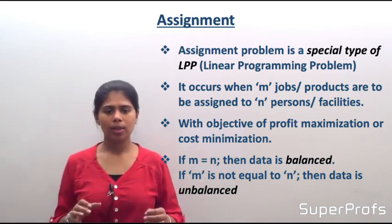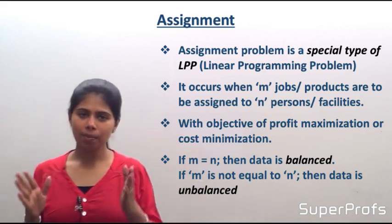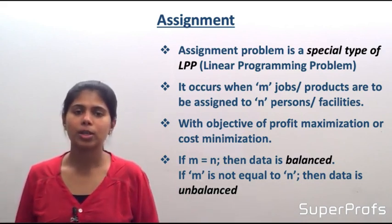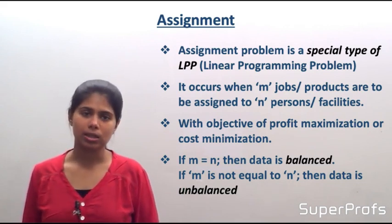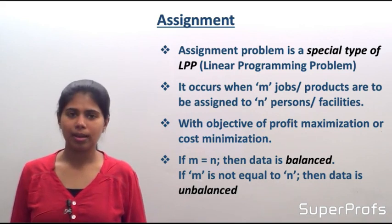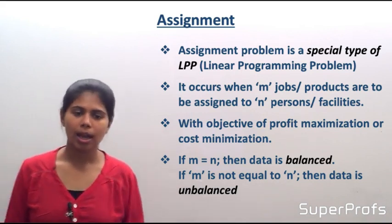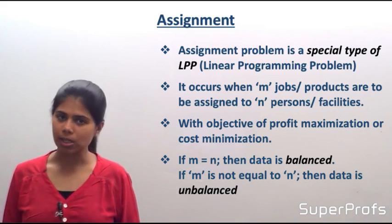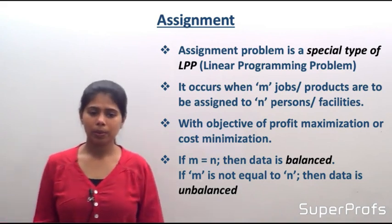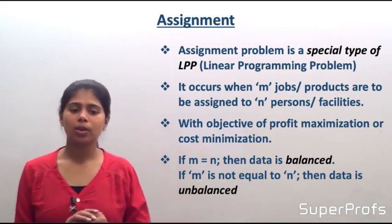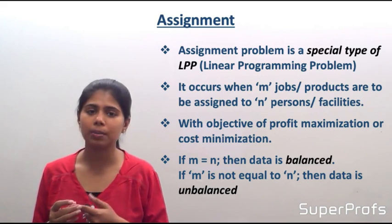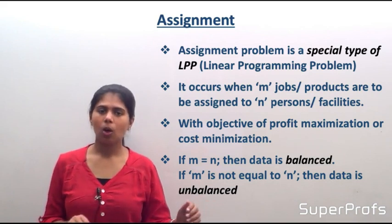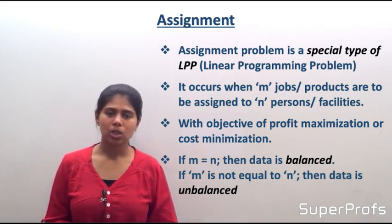Assignment occurs when there are M jobs or products to be assigned to N persons or facilities. For example, I may have 100 products or jobs which I have to assign to 20 or 25 persons or facilities. An assignment problem will have an objective, and the objective will be either profit maximization or cost minimization.